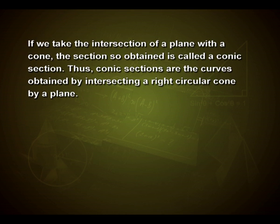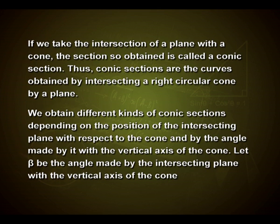If we take the intersection of a plane with a cone, the section so obtained is called a conic section. Thus, conic sections are the curves obtained by intersecting a right circular cone by a plane. We obtain different kinds of conic sections depending on the position of the intersecting plane with respect to the cone and by the angle made by it with the vertical axis of the cone. Let beta be the angle made by the intersecting plane with the vertical axis of the cone.